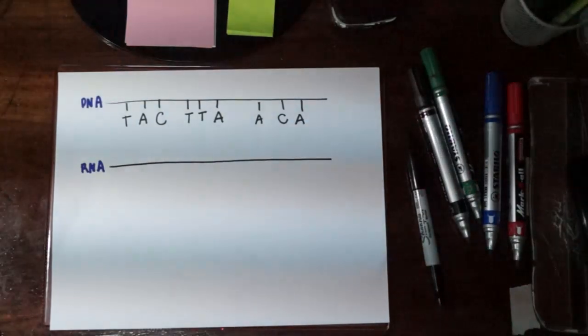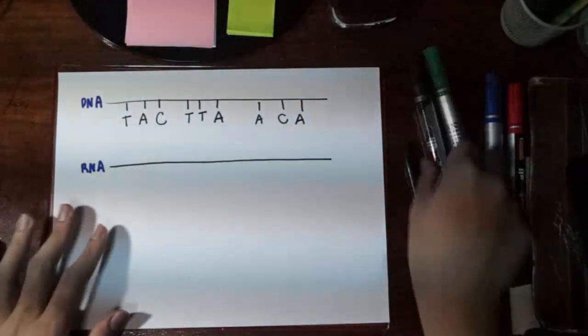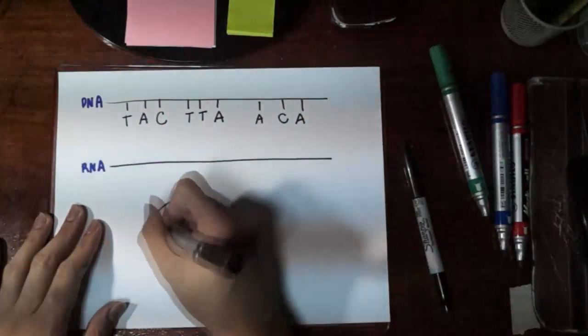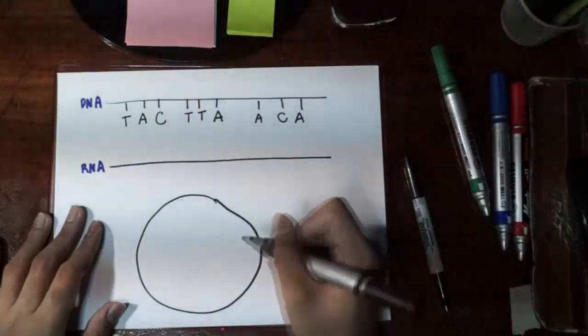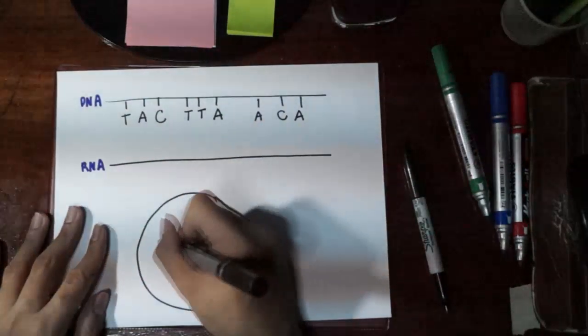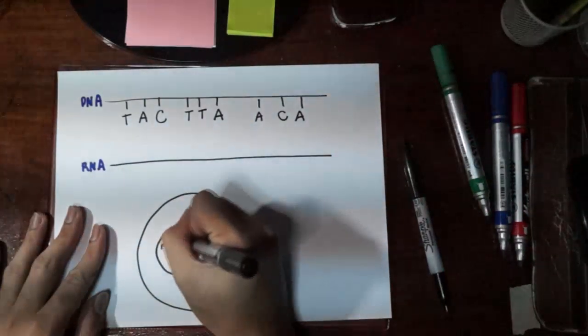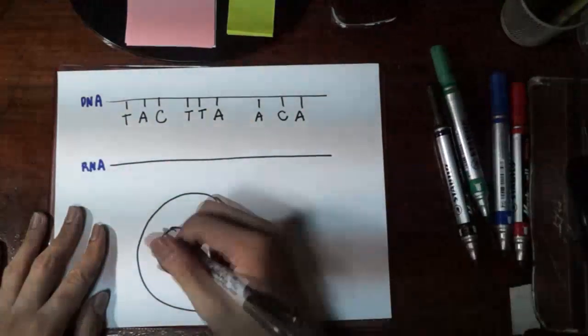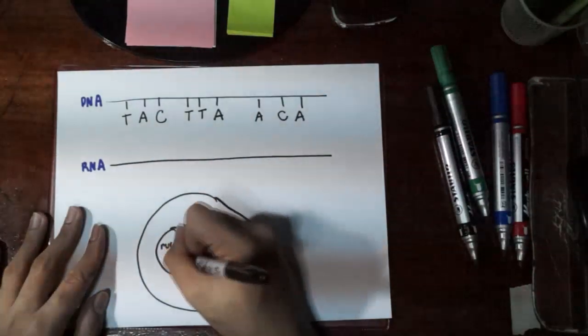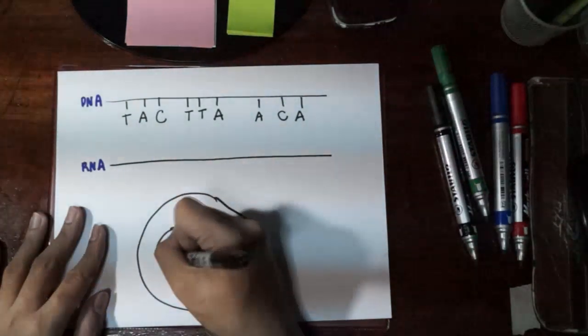So actually, if we draw it here, I'm going to draw a cell. Let's say that's a cell membrane, this is the cytoplasm, and this is the nucleus. In the nucleus you find DNA in double helix.